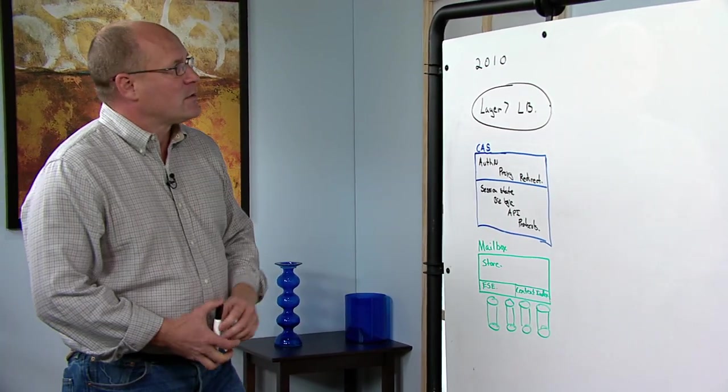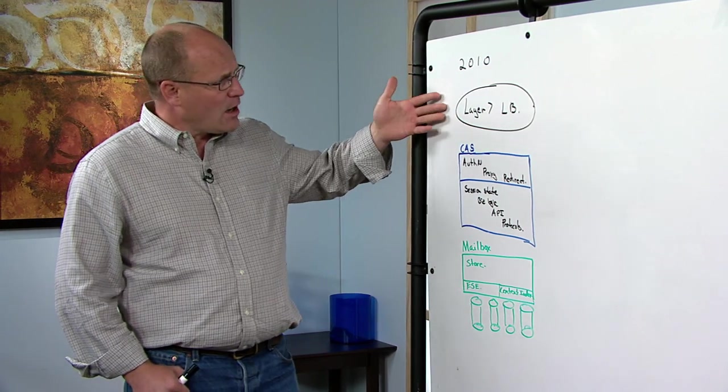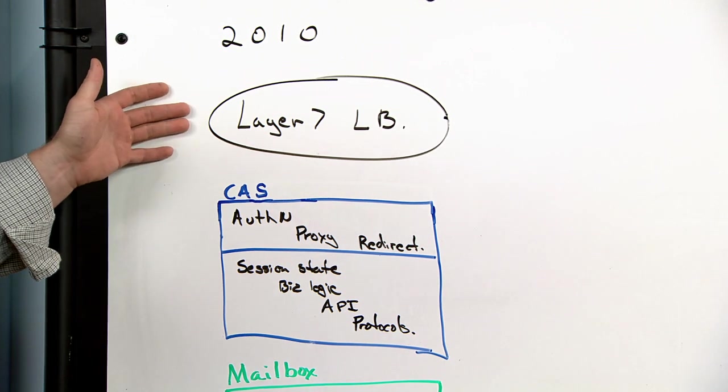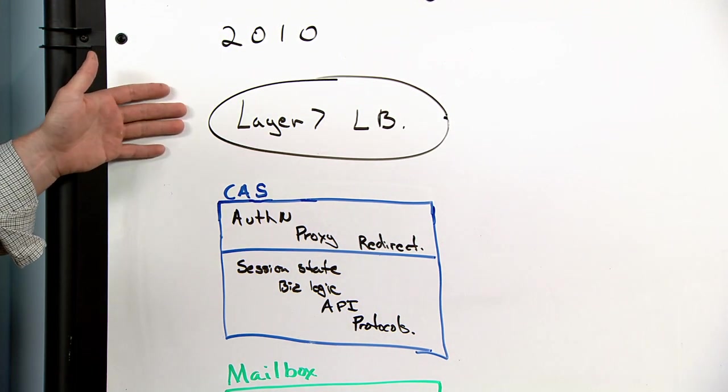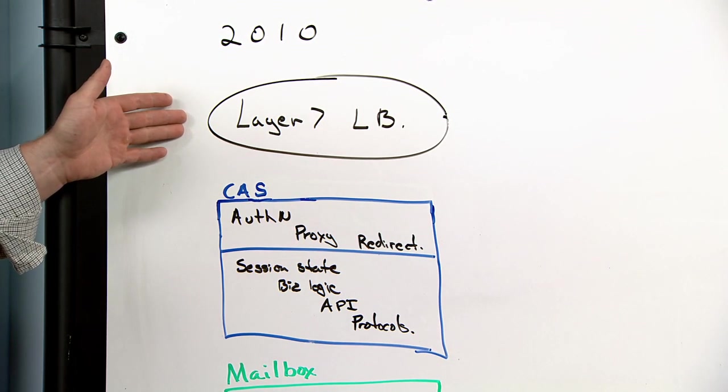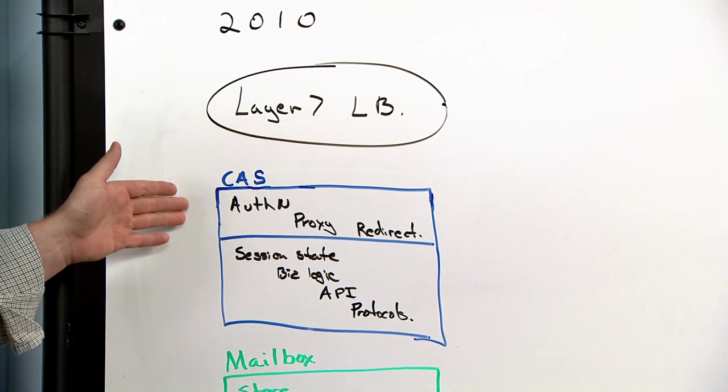Looking at a classic 2010 deployment, starting at the top, we have something that most people are going to have to deploy, which is called a layer seven load balancer. It's a fairly complex and expensive piece of equipment, hard to manage, and its job is to make sure that when requests come in, they stay sticky to a particular CAS server.